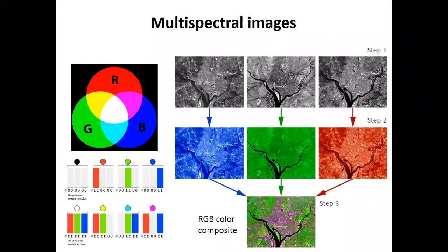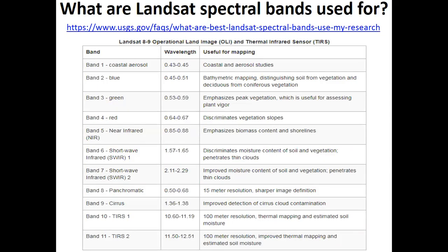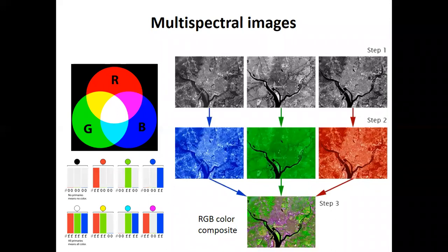You can choose any three of the 11 Landsat spectral bands. If you choose visible colors — coloring blue light as blue, green light as green, and red light as red — you get a natural color image like what you see in Google Maps. But if you visualize not the real green but some invisible infrared, and as red you visualize shortwave infrared, and as blue you visualize visible red or another invisible wavelength like thermal infrared — you get a false color composite where colors are unusual but very informative.